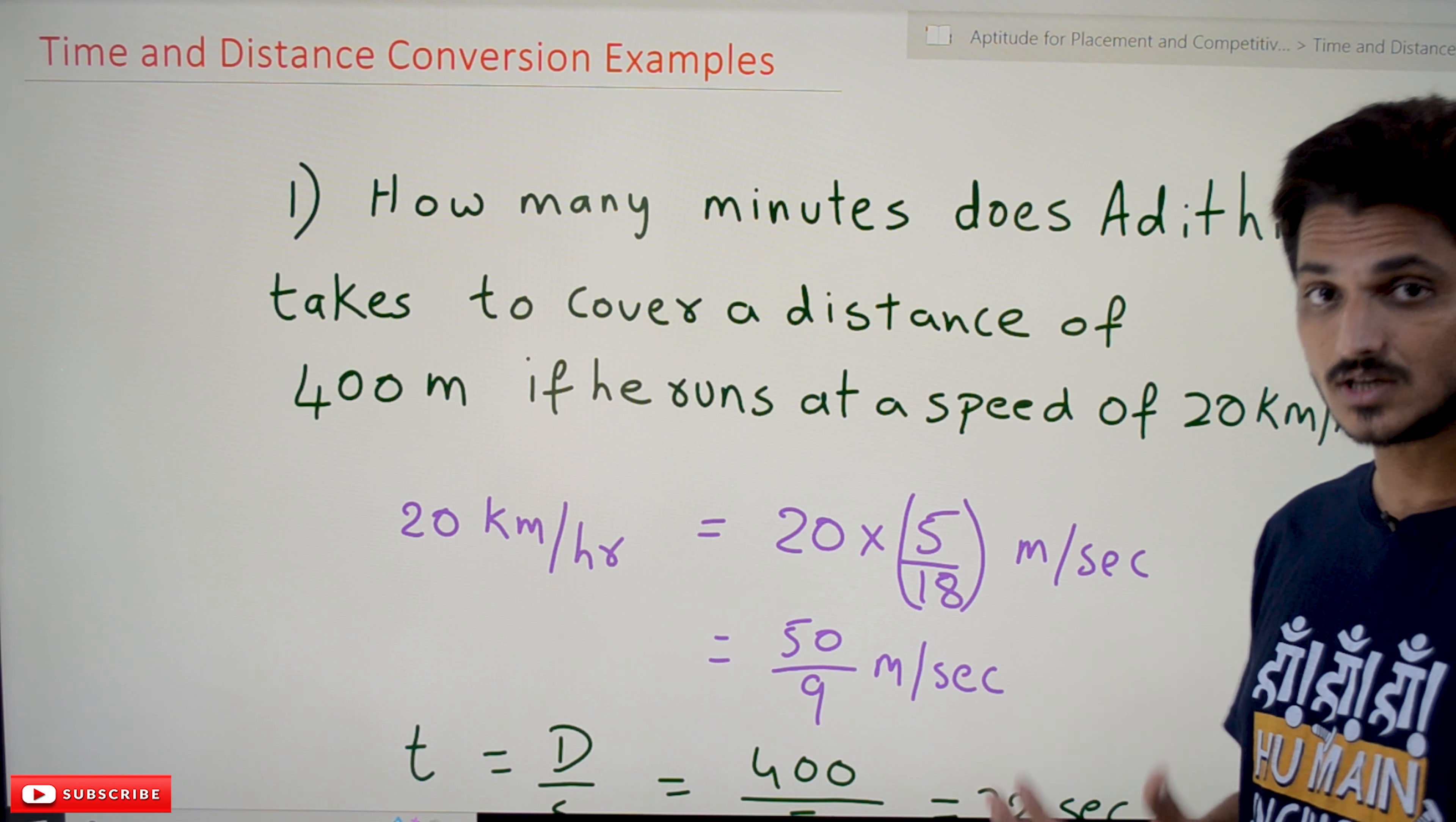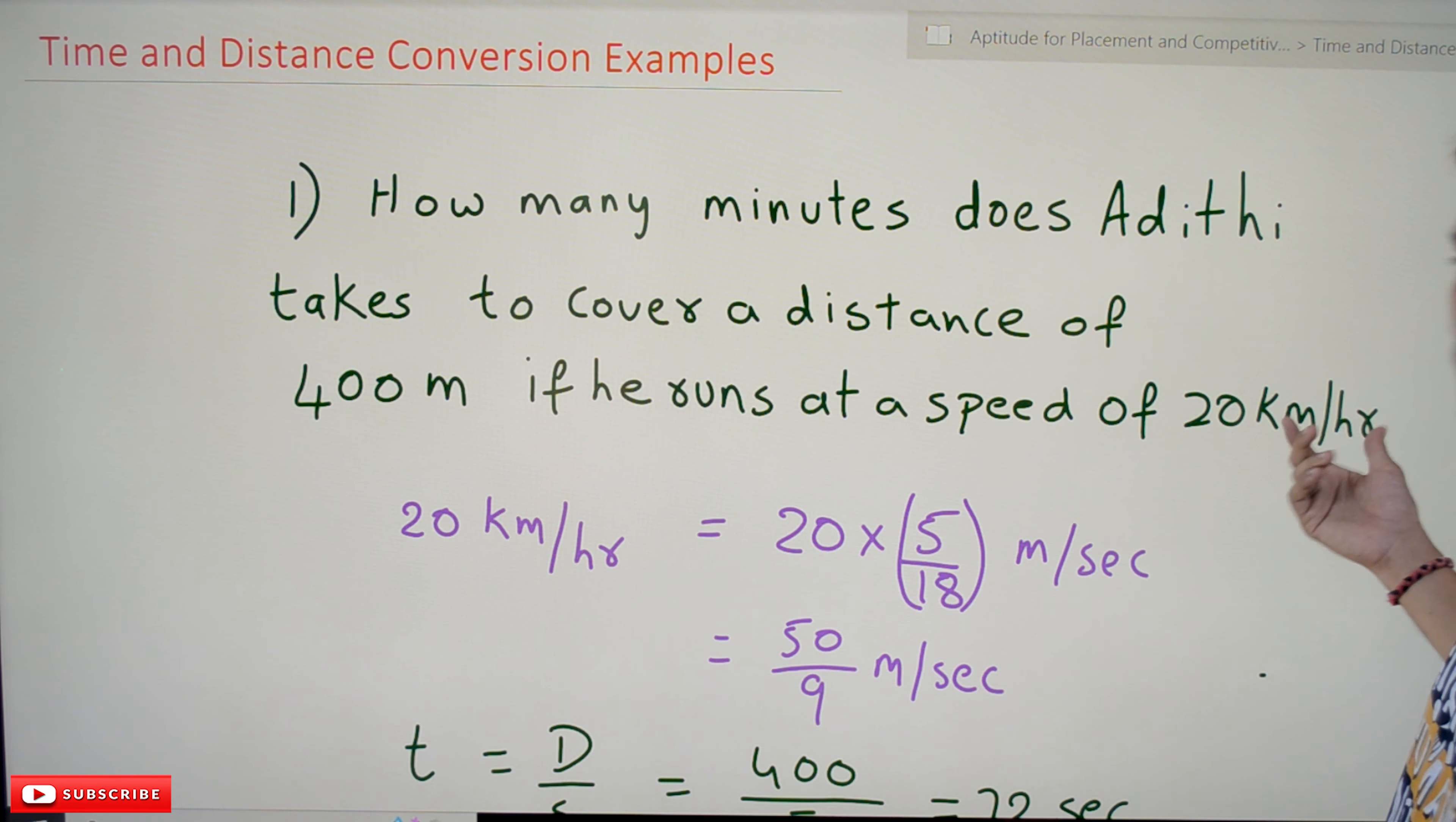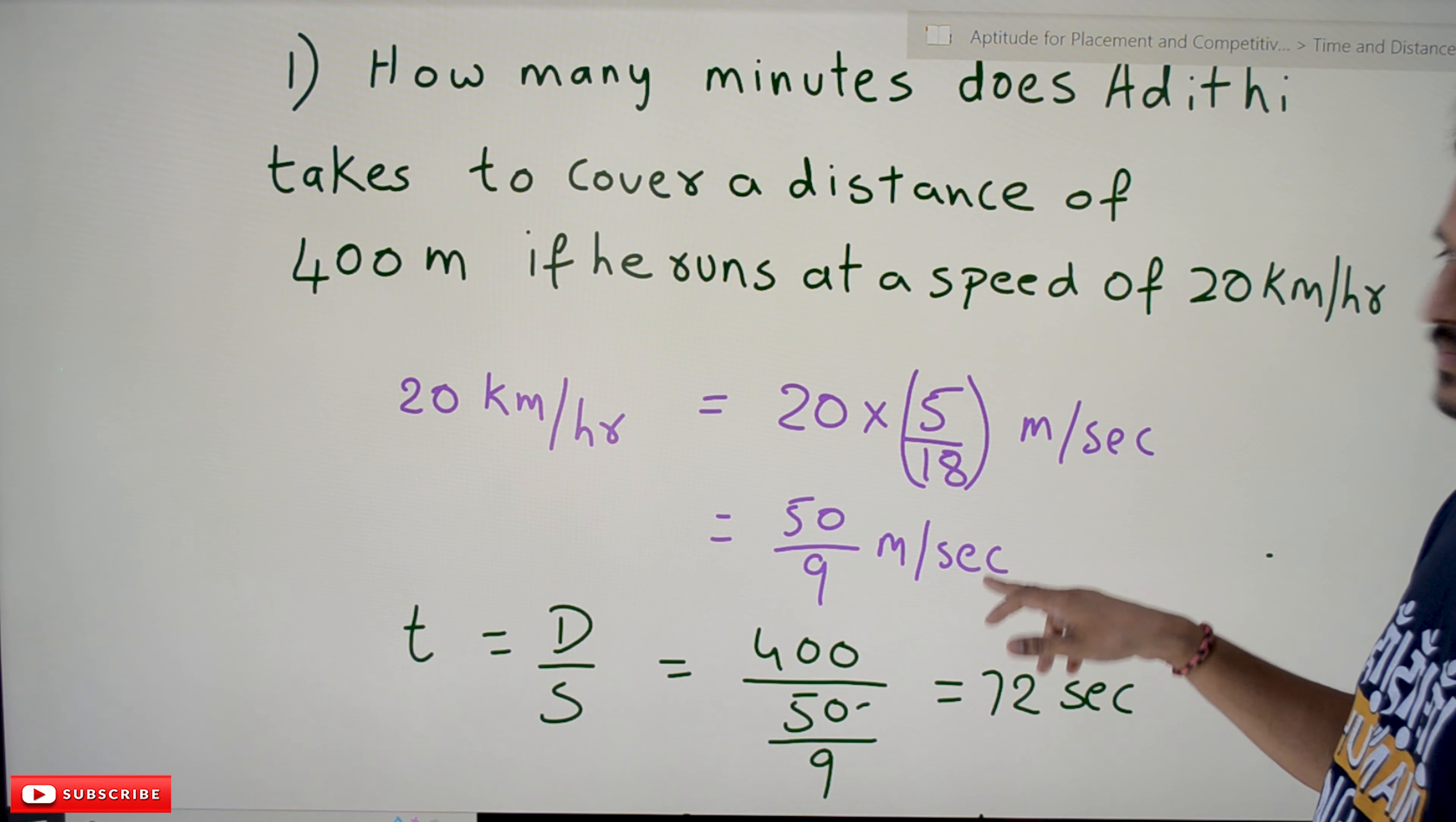In our last class we discussed that if you want to convert from kilometers per hour to meters per second, multiply by 5 by 18. So 20 kilometers per hour multiplied by 5 by 18 equals 50 by 9 meters per second.